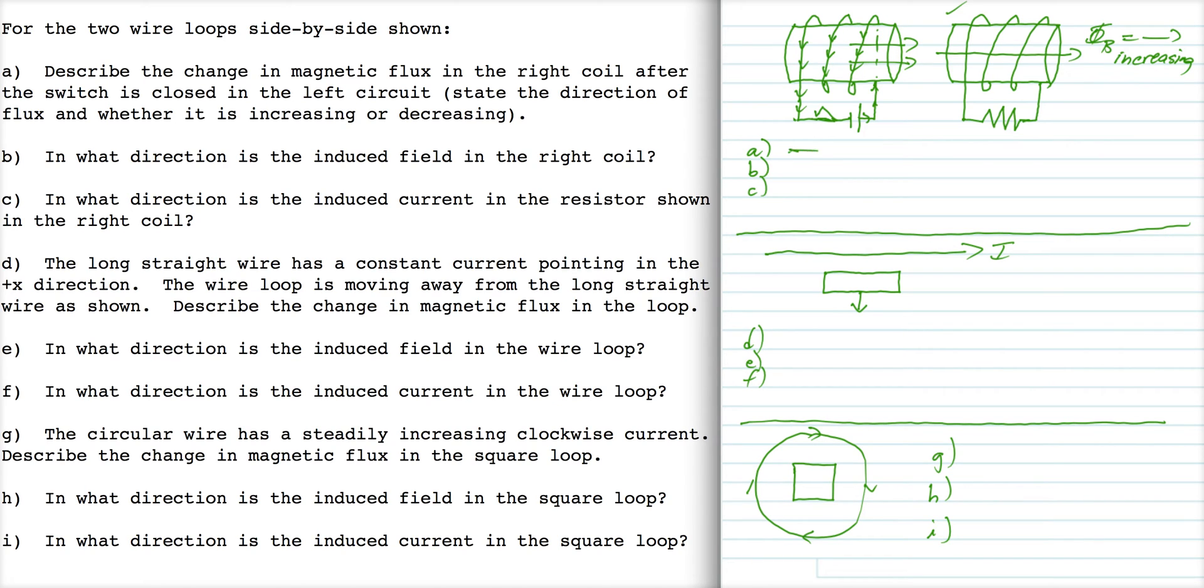Part B says what is the direction of the induced field. Well, if the magnetic flux is to the right and increasing, the induced field is going to try to cancel out that change by inducing a field that points to the left.